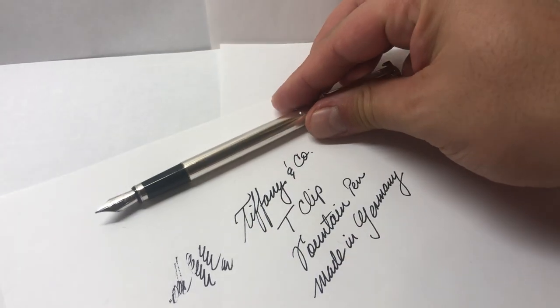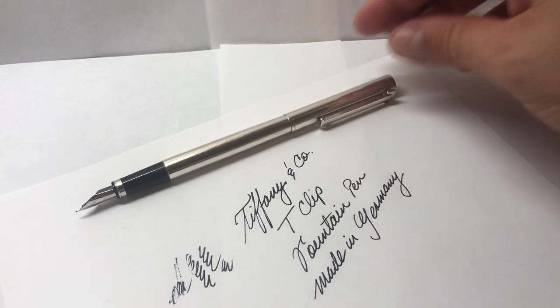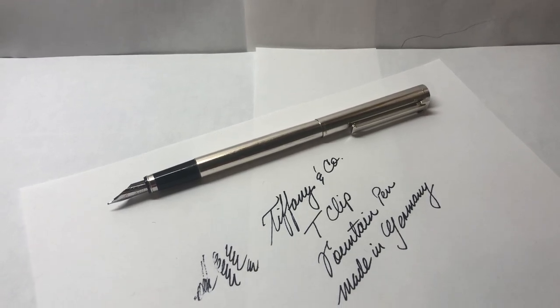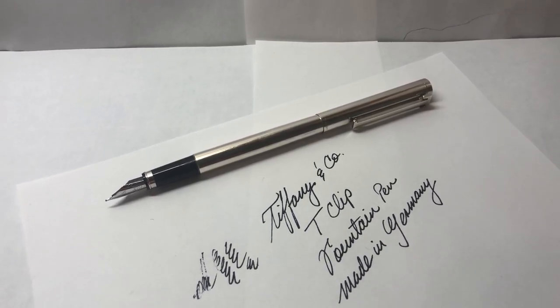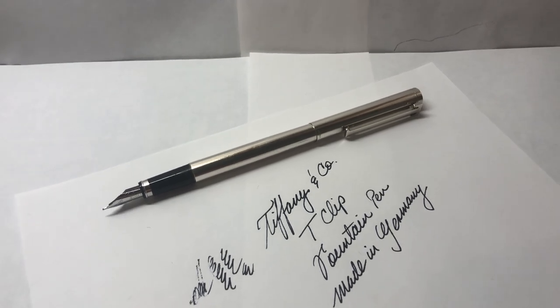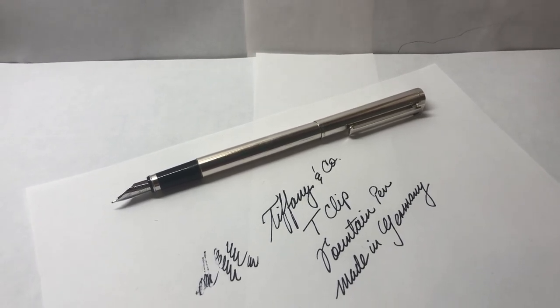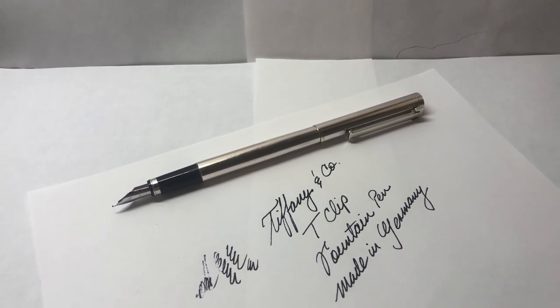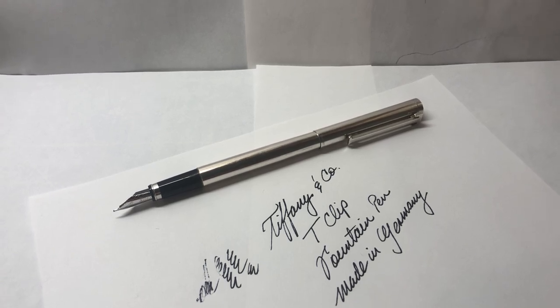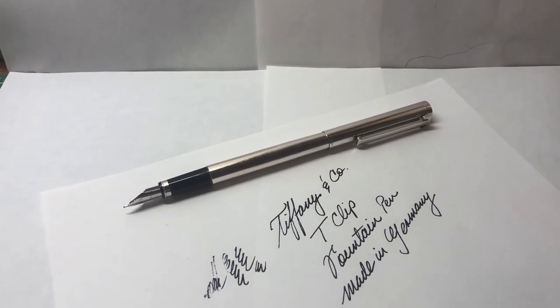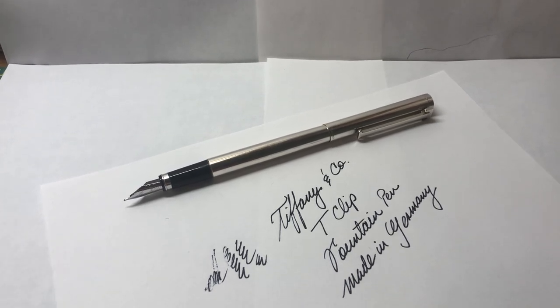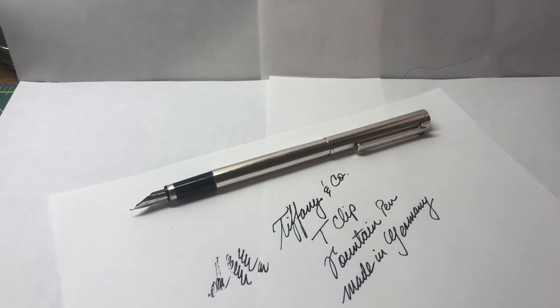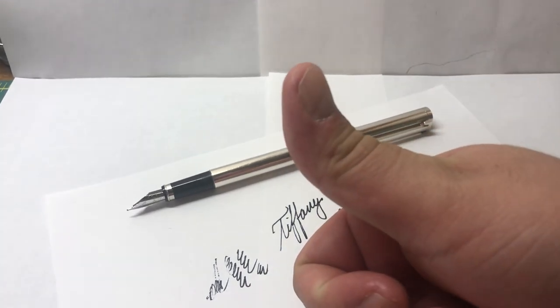But overall, in general, the nib is pretty good, good as any I guess standard German nib. So would I recommend this pen? Yes, it's an interesting find if you're lucky to find another one because they're not very common. The design of the nib is really beautiful and it also writes pretty good. So again, this was the review on the Tiffany and Co T-clip sterling silver fountain pen. I hope you like this review. Please feel free to comment or share any experiences if you have this pen or any similar pens from Tiffany and stay tuned for more reviews. Thanks again for watching and see you soon. Bye bye.